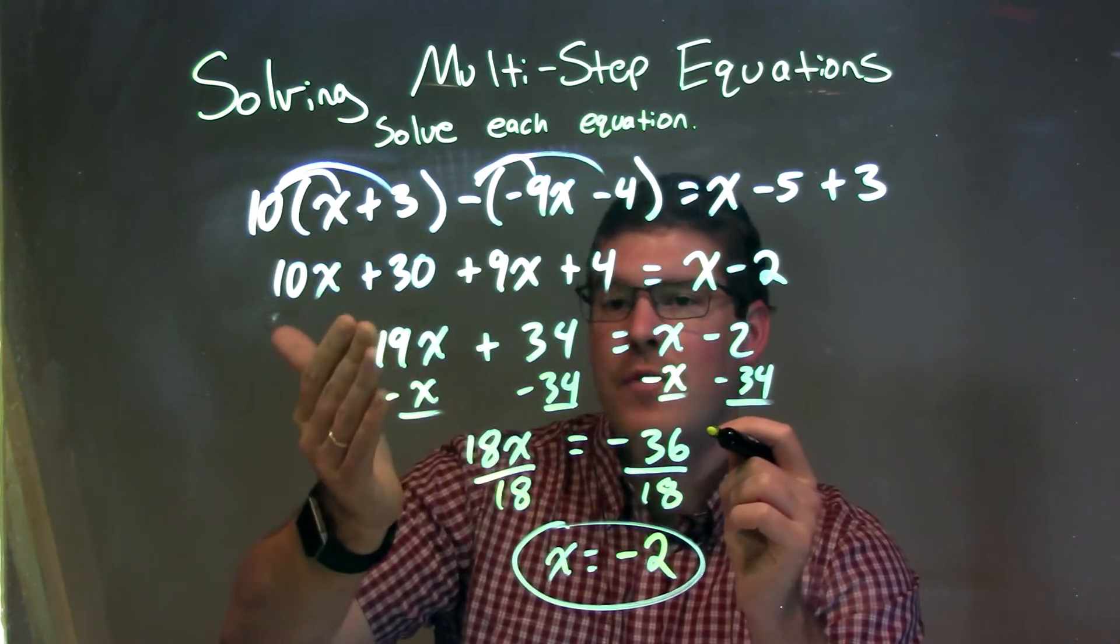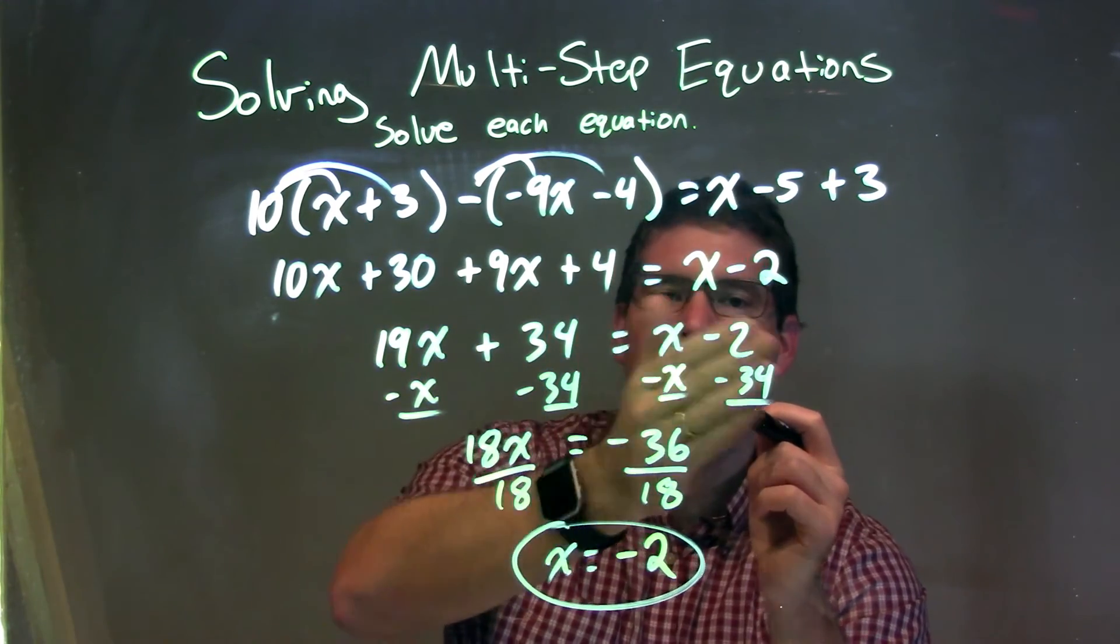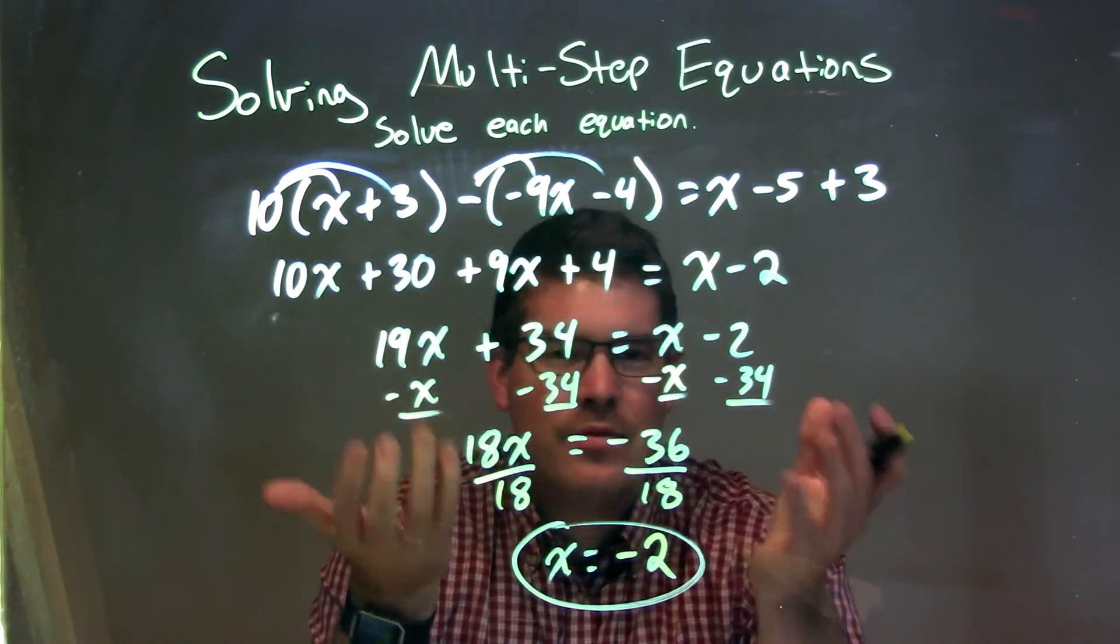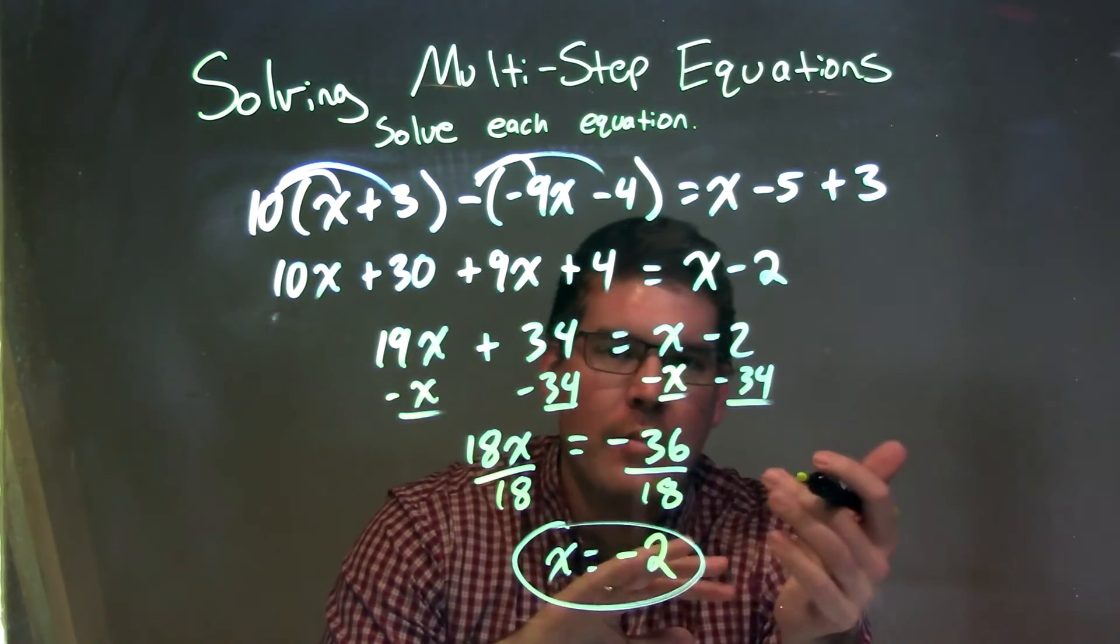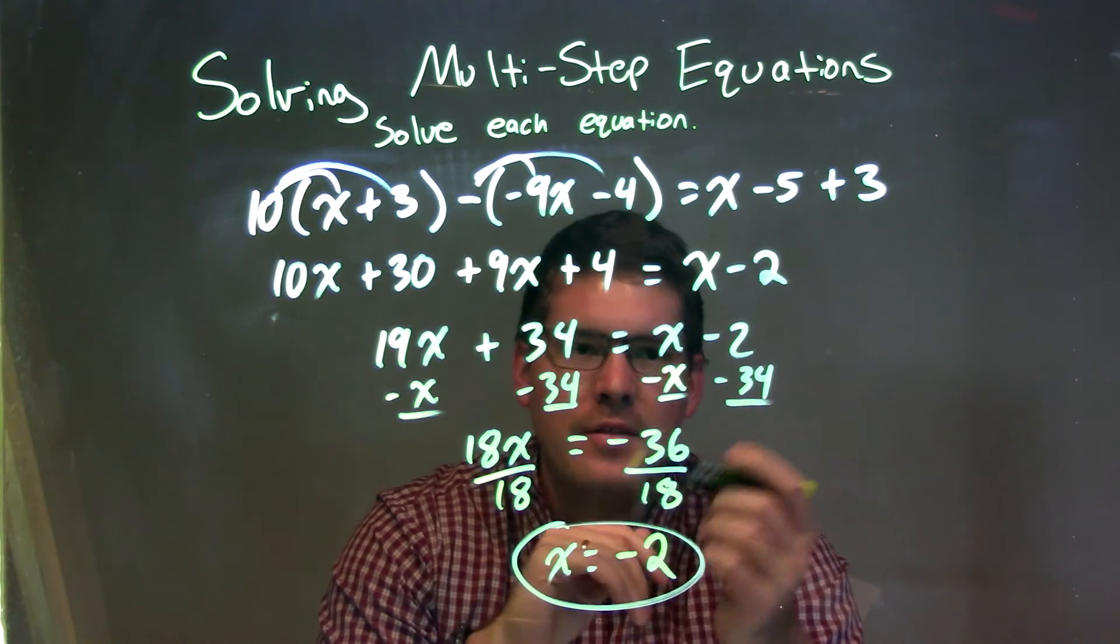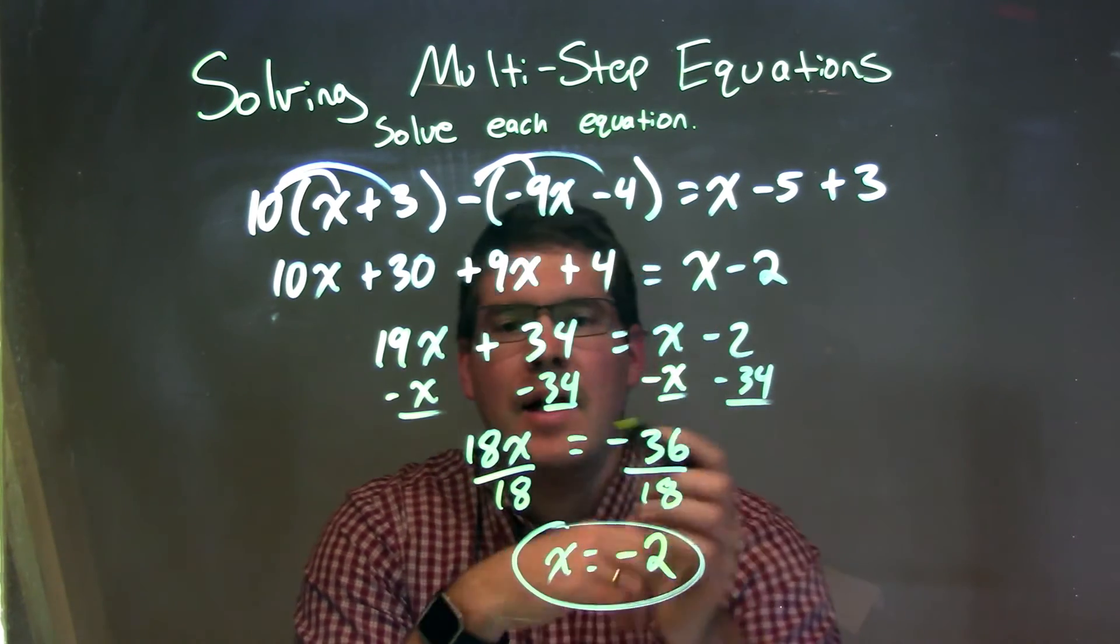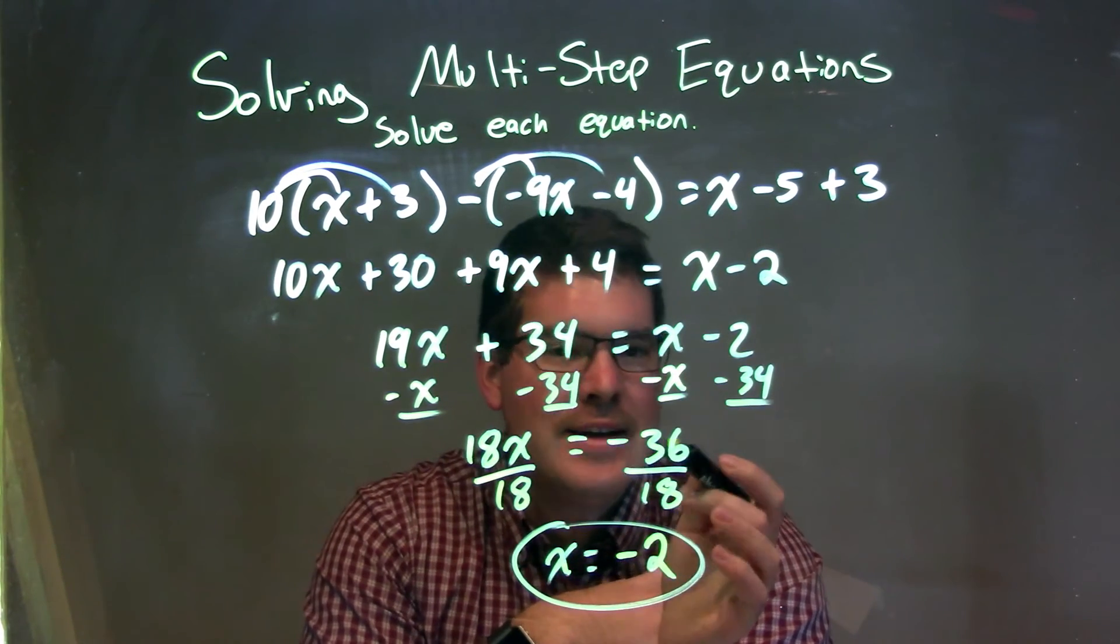At this point, I had a variable and number on each side, and I couldn't simplify further on each side. So I had to bring all the variables to one side and all the numbers to the other. I subtracted x from both sides and subtracted 34 from both sides. That left me with 18x equals negative 36.